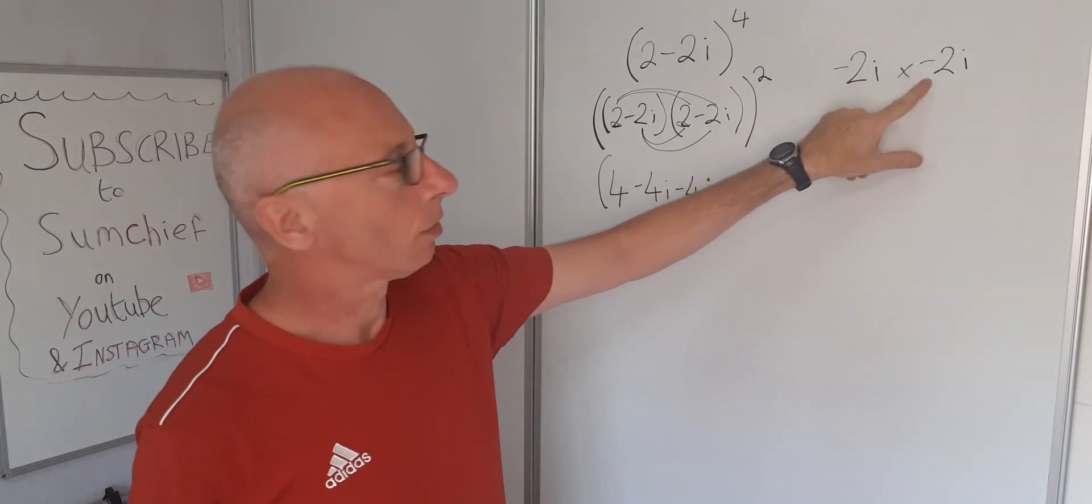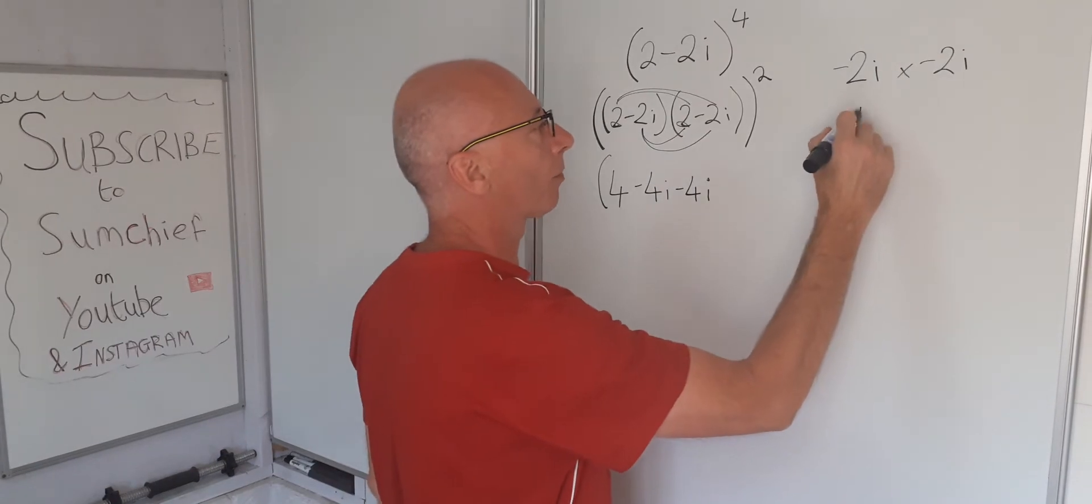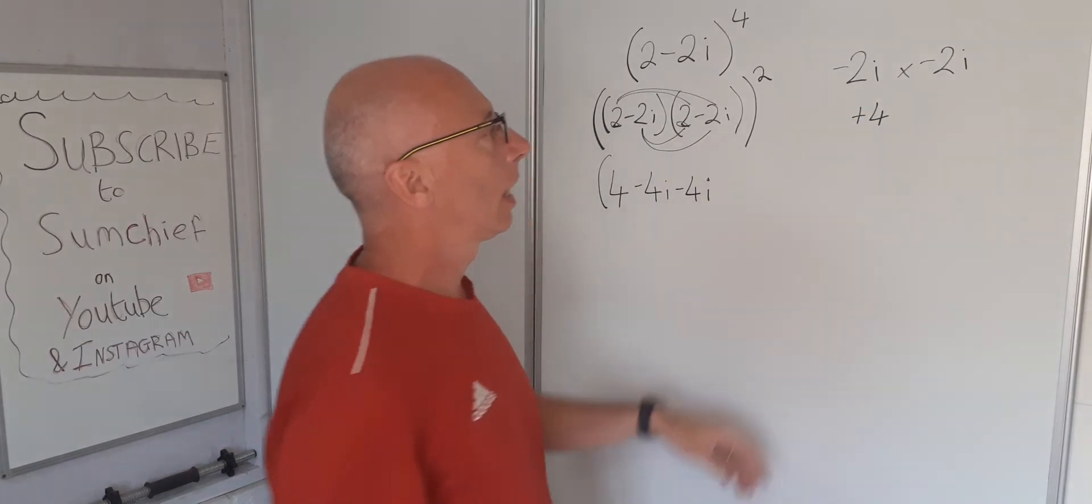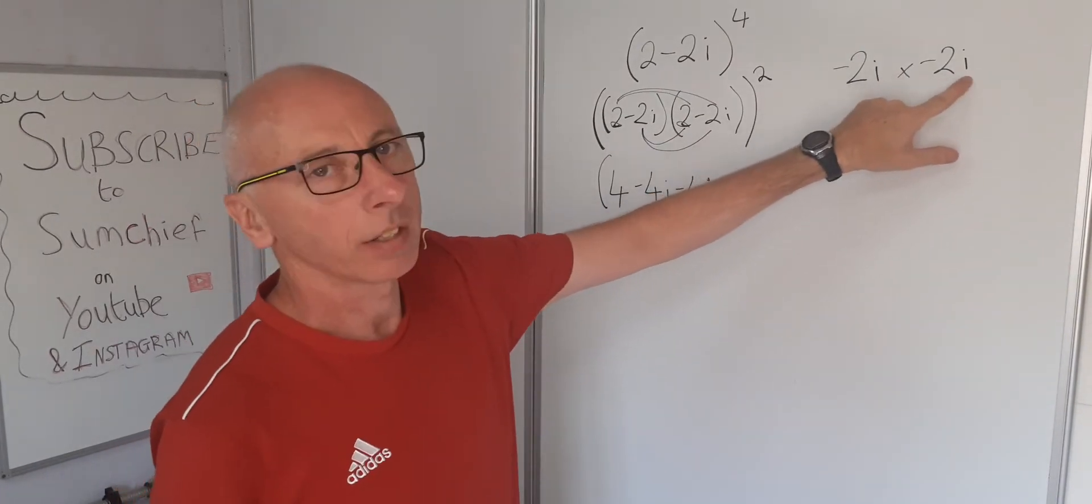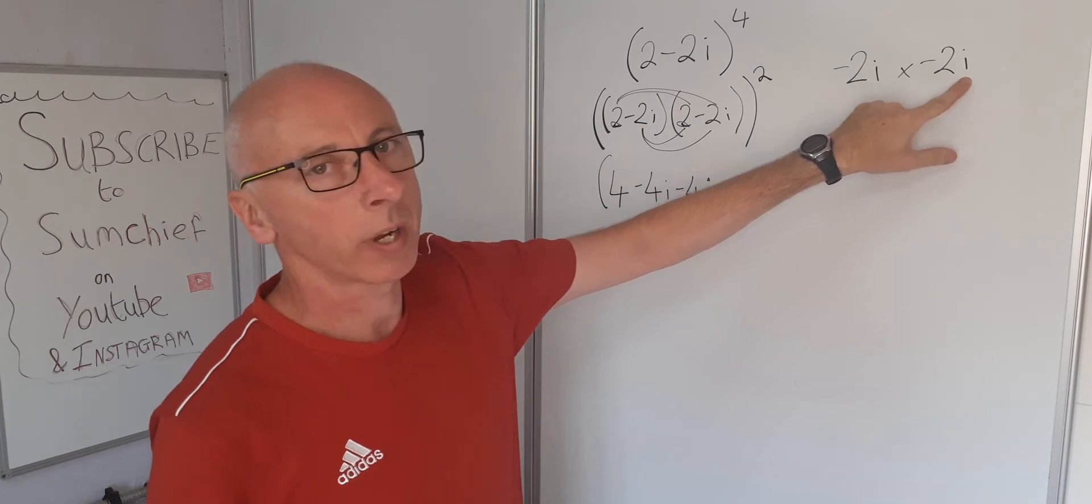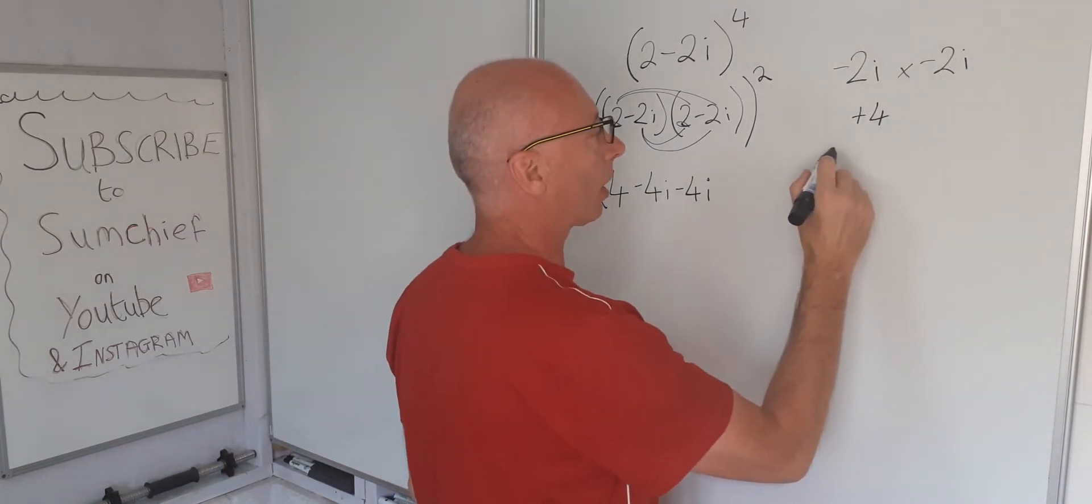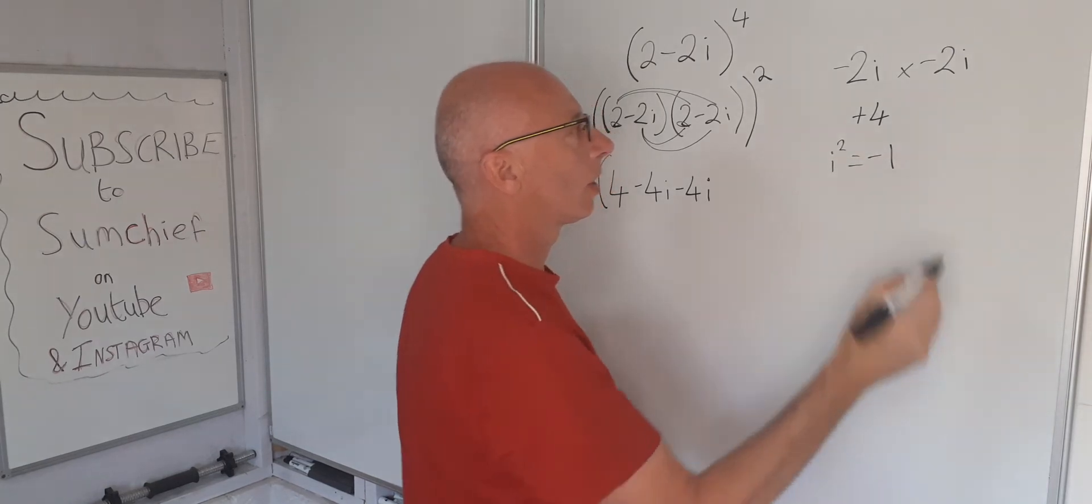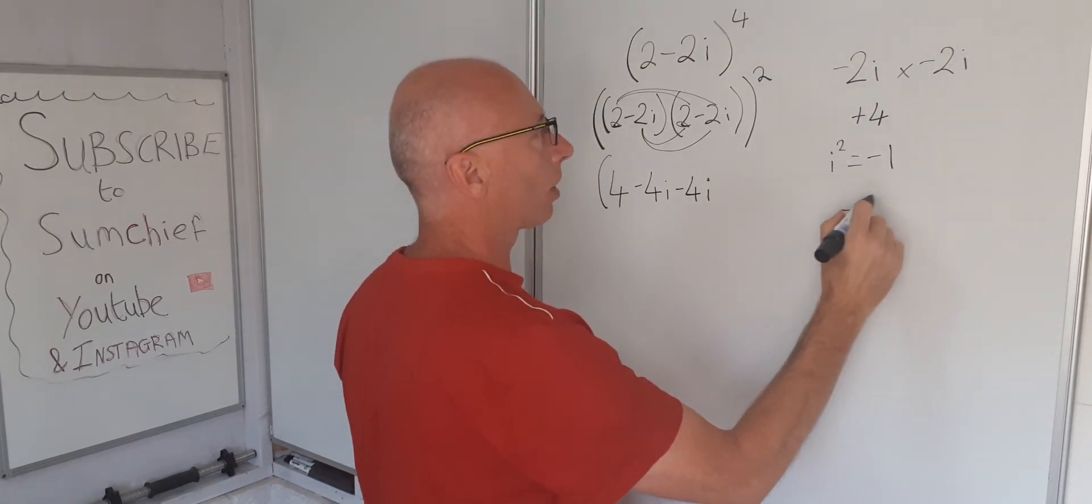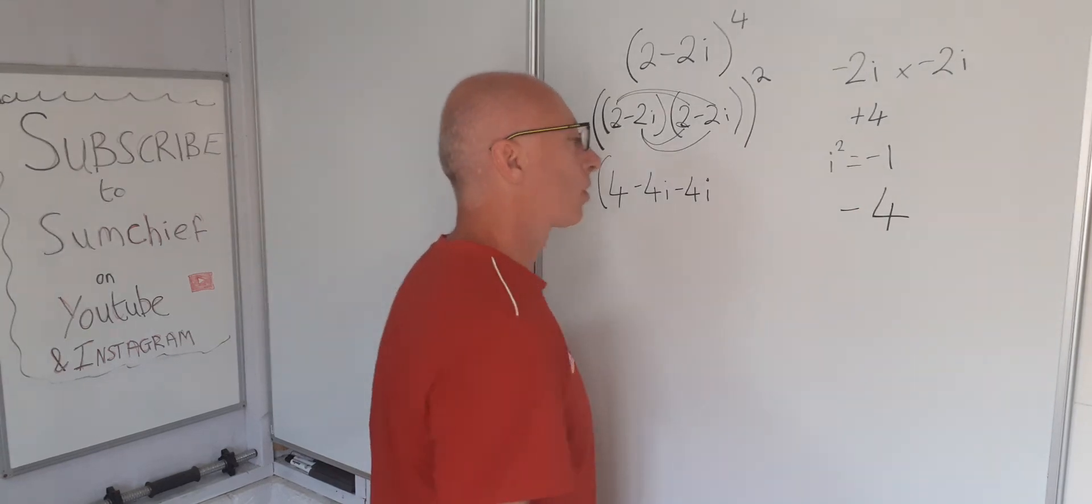So minus 2 times minus 2 is still 4, so that's plus 4. And the i times i, that gives us i squared. Well, i squared is minus 1. So i squared equals minus 1. So therefore here we've got minus 4.